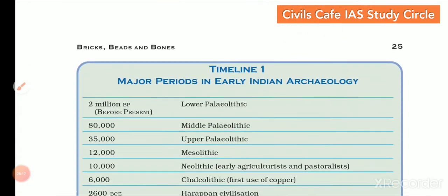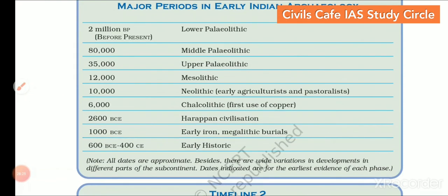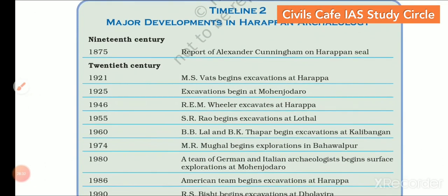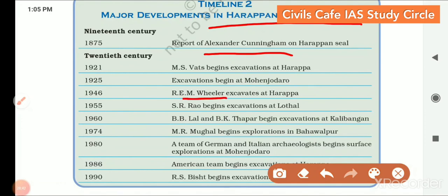This is all what this chapter is about. You can go through the timeline to understand what this time period refers to, including the timeline of major developments in Harappan archaeology. Names like Alexander Cunningham and Mortimer Wheeler are important — just have familiarity with these names. That's all there is to learn for the exam. Thank you.